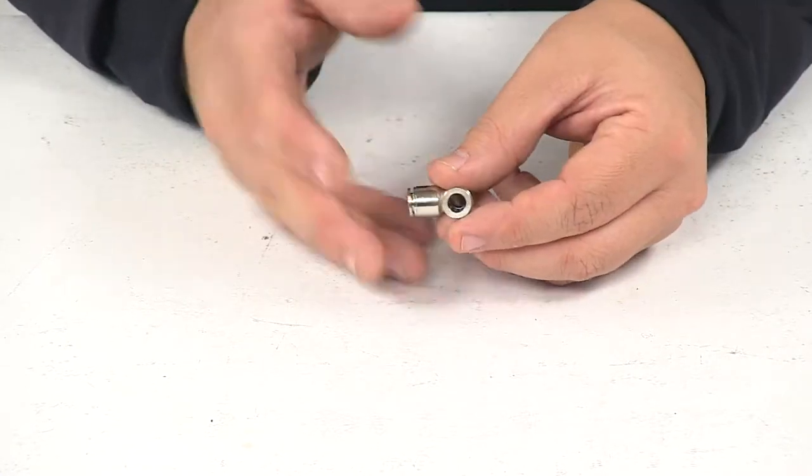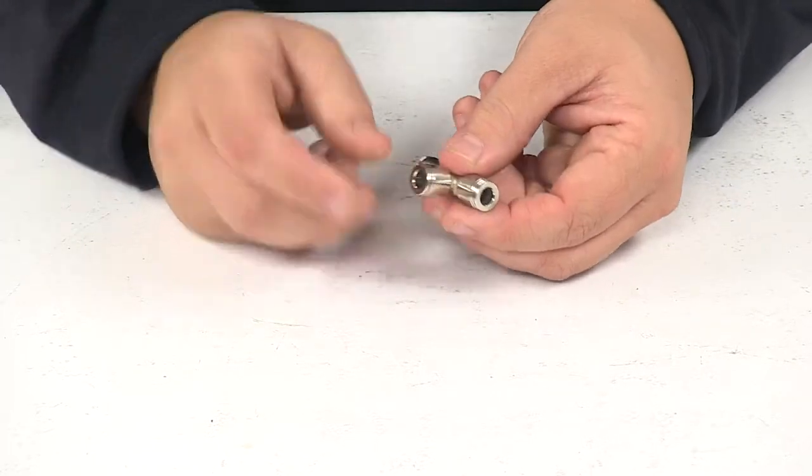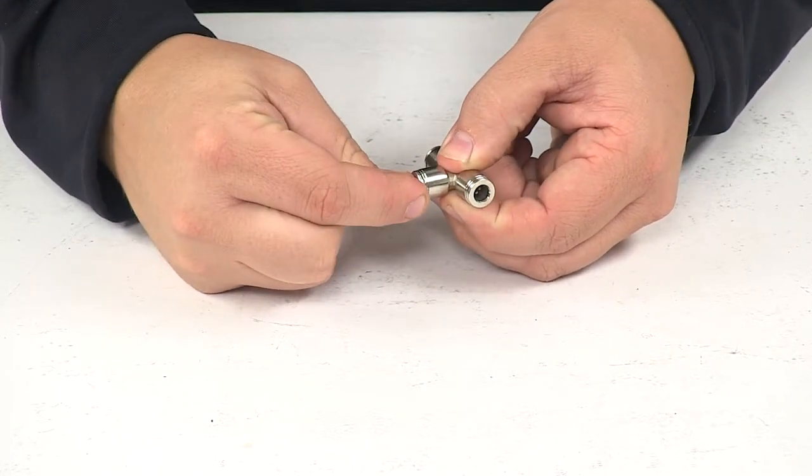It simply accepts quarter inch air line tubing and to install the air line tubing it's really easy. You just push it in to the connection point until it engages.